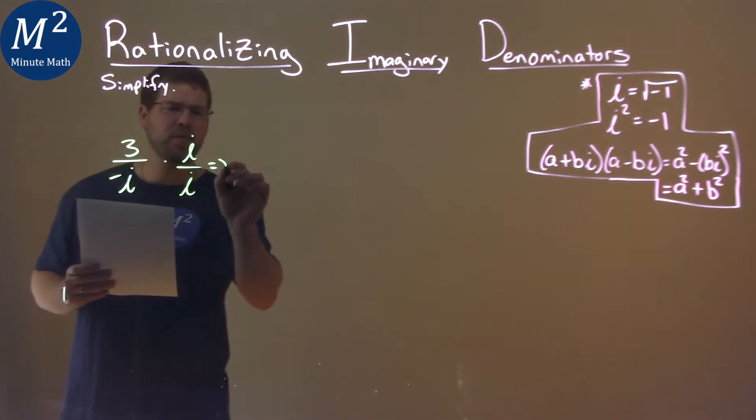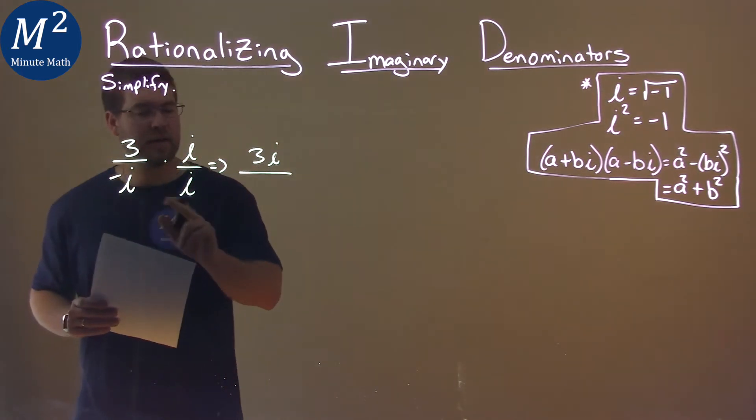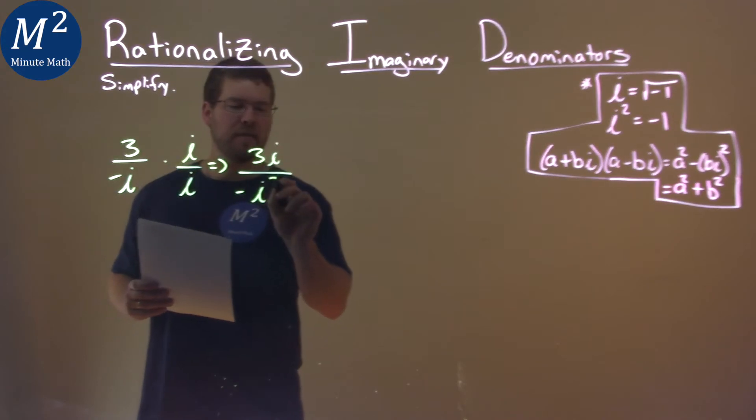What does that do? Well, the numerator is pretty easy. 3 times i is 3i. The denominator, negative i times i, negative i squared.